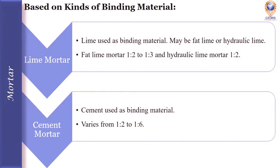The second is cement mortar, where cement is used as the binding material. Depending upon the strength required and importance of the work, the proportion of cement to sand varies from 1:2 to 1:6 ratio.